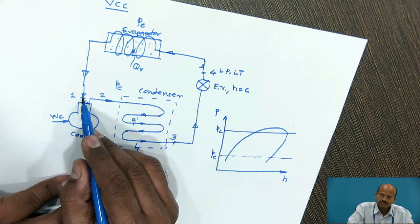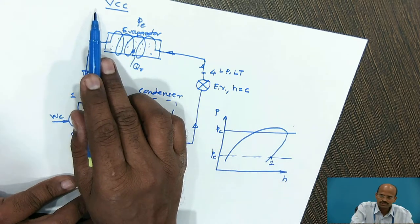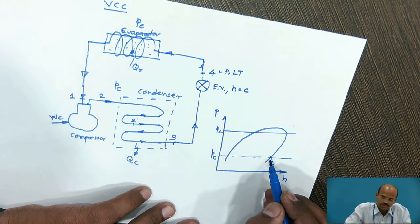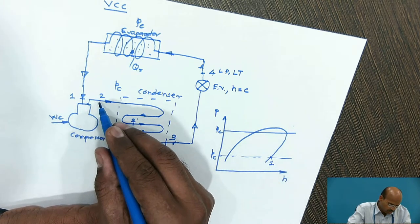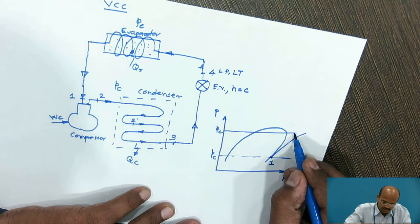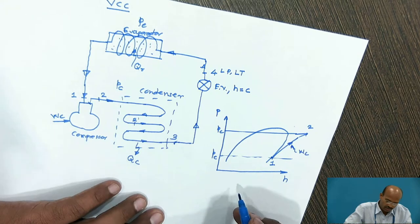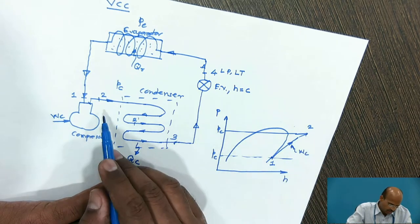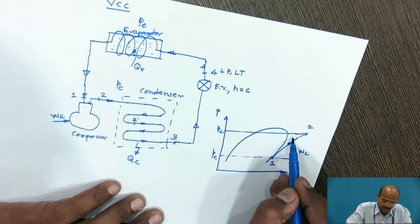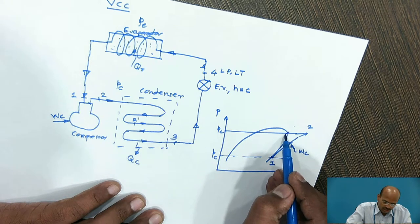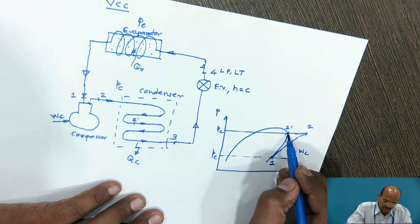Point 1 is the state of the refrigerant at inlet to the compressor — dry and saturated. For theoretical VCC, we assume the state of the refrigerant at the outlet of the evaporator, or inlet to the compressor, is dry and saturated. Process 1 to 2 is the isentropic compression process. The superheated vapor refrigerant then enters the condenser, where due to its high temperature it starts desuperheating by rejecting heat to the surrounding — from point 2 to 2-dash. So 2 to 2-dash is the desuperheating process.